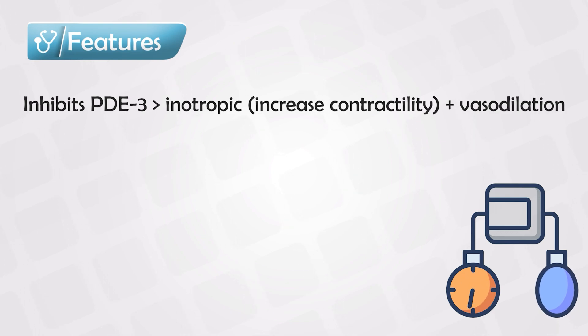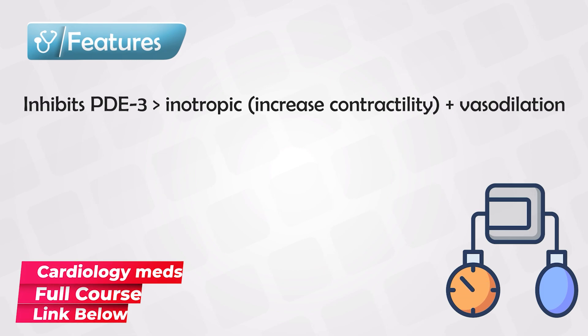In the cardiomyocytes, it causes the accumulation of cyclic AMP, which in turn increases the calcium influx. This results in inotropic effects of the heart, causing more contraction and increases of the heart rate.